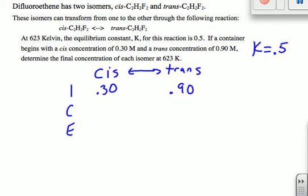And one thing that might be helpful is to figure out, well, which way is it going to go? So we know that the formula for K is going to be the products over reactants. So it's essentially going to be trans divided by the cis. And in this case, the trans concentration is 0.9. So it's 0.9 divided by the cis, which is 0.3.